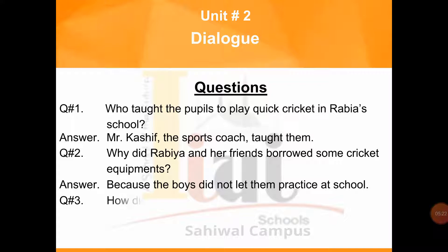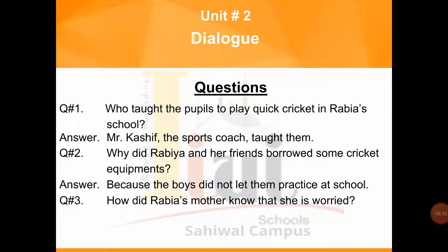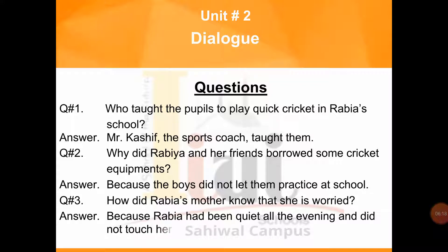Come to question number 3: How did Rabia's mother know that she is worried? Write down this question in your English classwork page. You can find the answer in the very first line of this lesson where her mother says, 'What's wrong? You have been quiet all evening. You hardly touched your dinner.' The answer is: because Rabia had been quiet all evening and did not touch her dinner. Write down this question and its answer in your English classwork notebook.